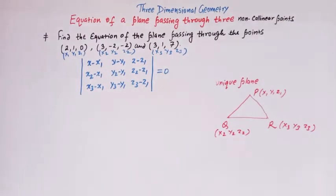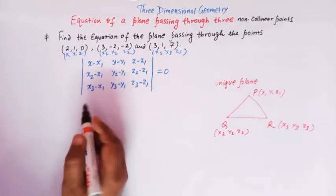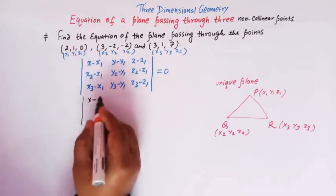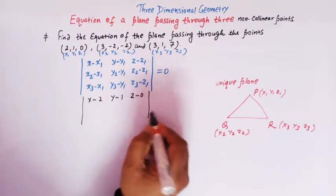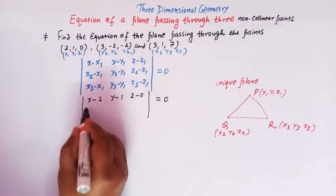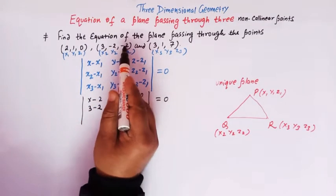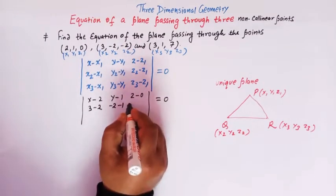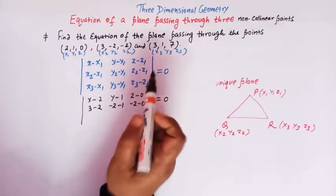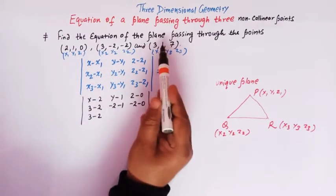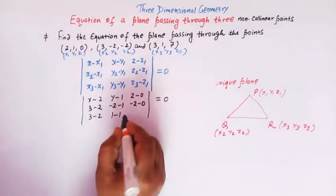Now let us substitute the values of x1, y1, z1, x2, y2, z2, and x3, y3, z3 into this determinant. So we have (x − 2), (y − 1), (z − 0) in the first row. For the second row: (x2 − x1) = 3 − 2 = 1, (y2 − y1) = −2 − 1 = −3, and (z2 − z1). For the third row: (x3 − x1) = 3 − 2 = 1, (y3 − y1) = 1 − 1 = 0, and (z3 − z1) = 7 − 0.